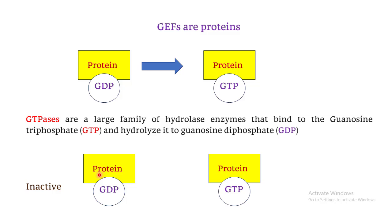When a GDP molecule is attached to the GTPase, the GTPase is in its inactive form. When the GEF acts on this inactive GTPase, replacing the GDP with a GTP, the GTPase moves into its active form. The GTPase then hydrolyzes the GTP back into GDP, moving from the active back to the inactive form.